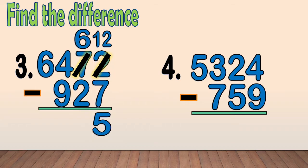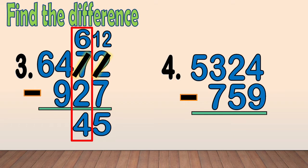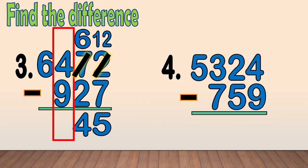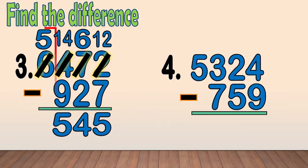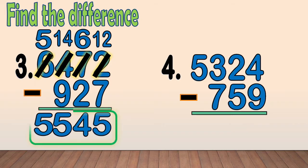Next, we subtract the tens: 6 minus 2 equals 4. Then, we subtract the hundreds: 4 minus 9. We cannot subtract 9 from 4, so we regroup 1,000 from 6. We have 14 hundreds. We cross out the 4 and write 14 as new hundreds. Now we only have 5 thousands — we cross out the 6 and write 5 at the top. We subtract the hundreds: 14 minus 9 equals 5. And bring down the thousands digit 5. So, 6,472 minus 927 equals 5,545.